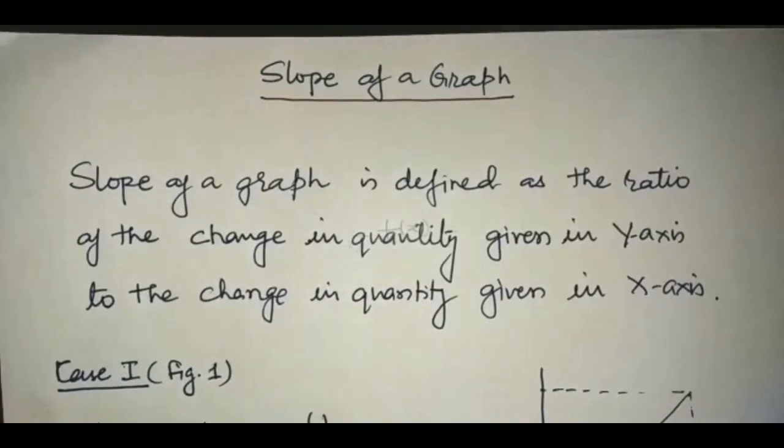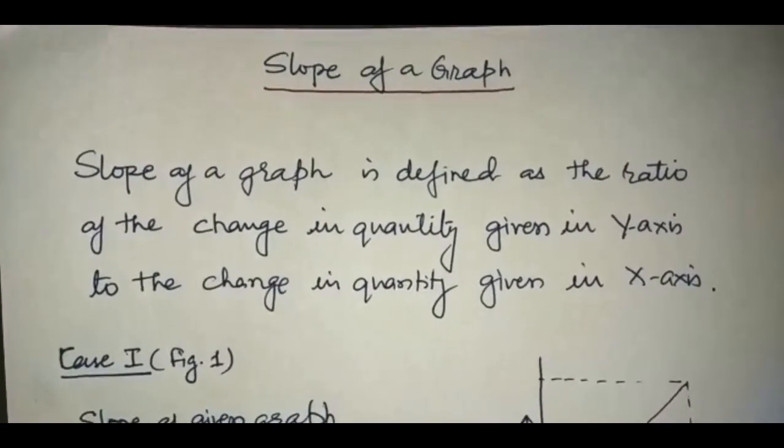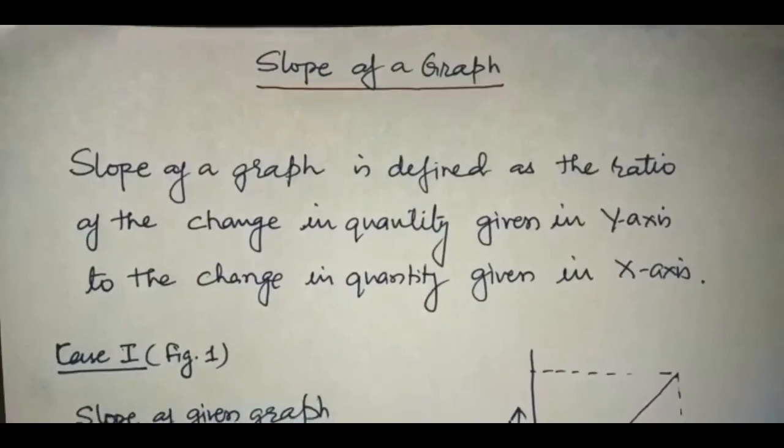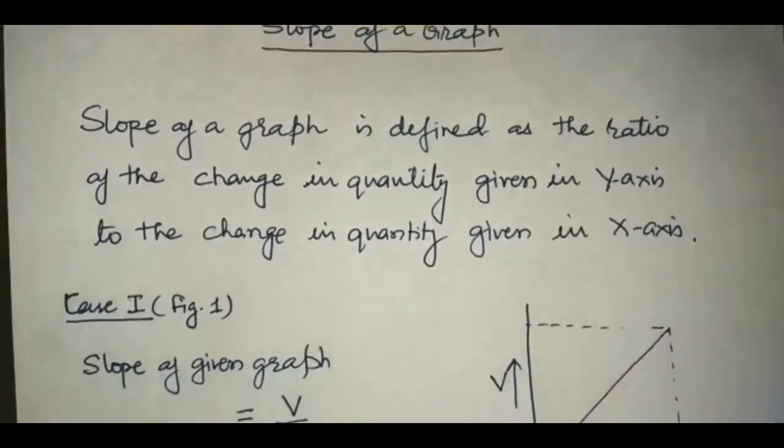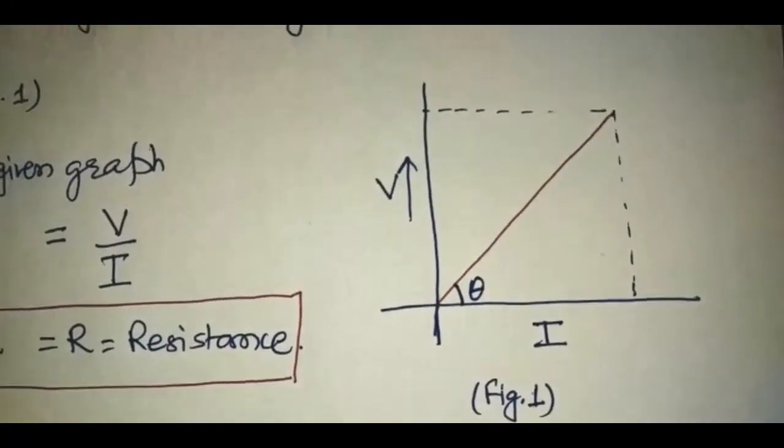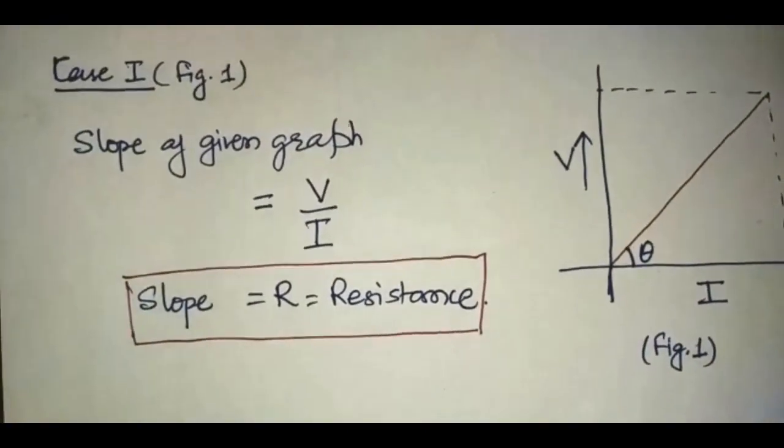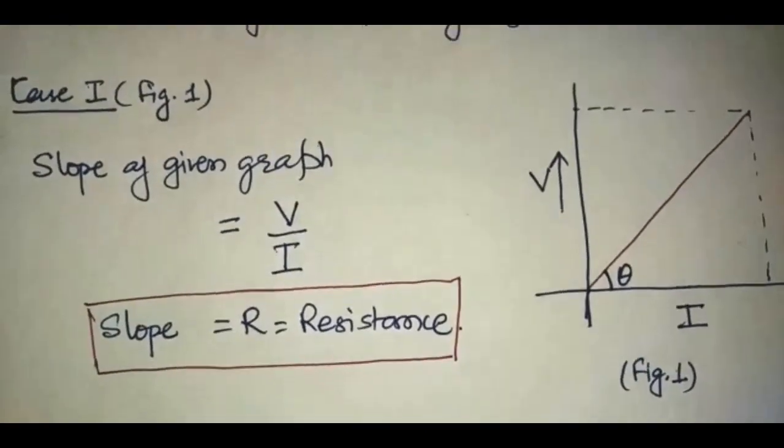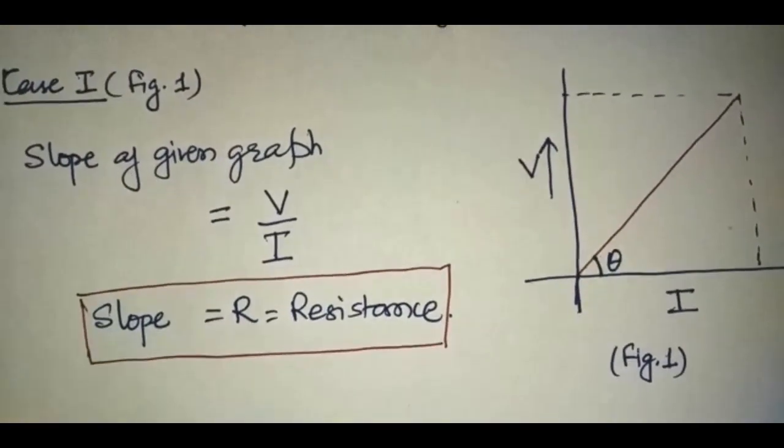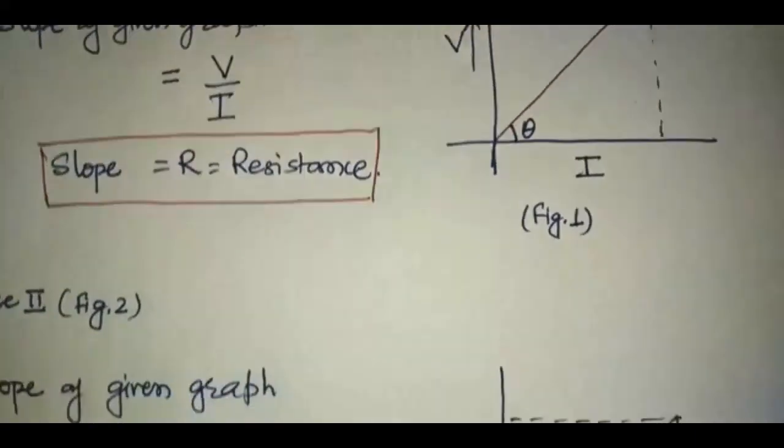Slope of a graph is defined as the ratio of the change in quantity given in y-axis to the change in quantity given in x-axis. Let us find the slope of this graph. In this graph, voltage is taken in y-axis, current is taken in x-axis. Therefore the slope of this graph equals V/I, and we know that V/I is known as resistance. Therefore the slope of this graph is resistance.